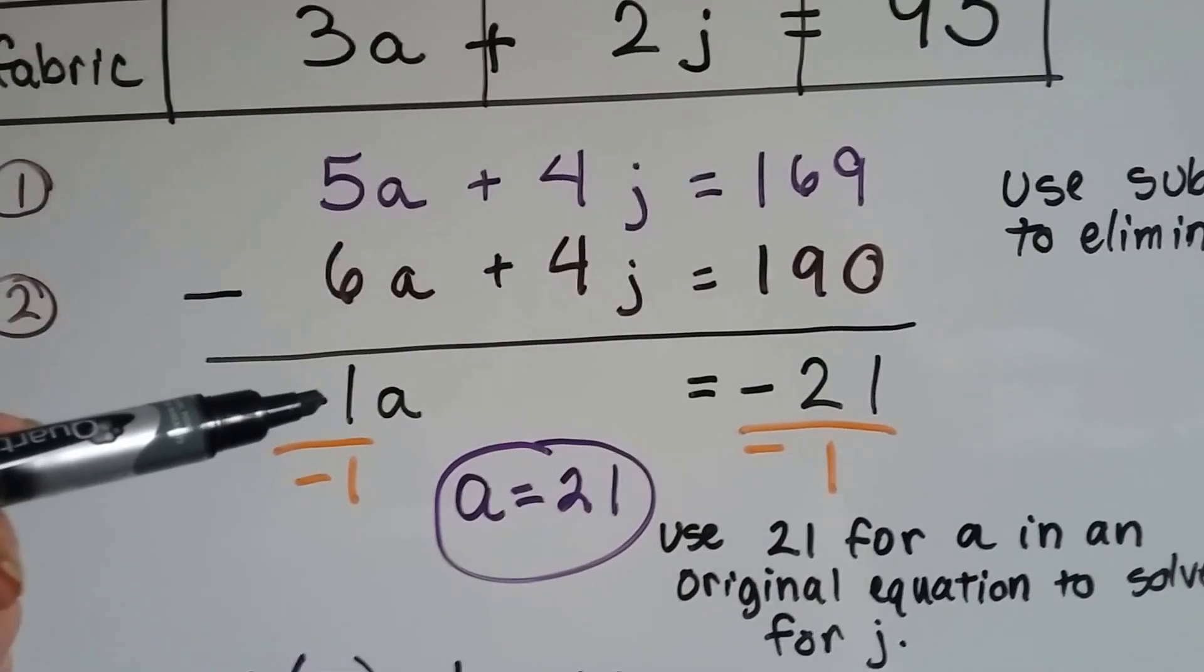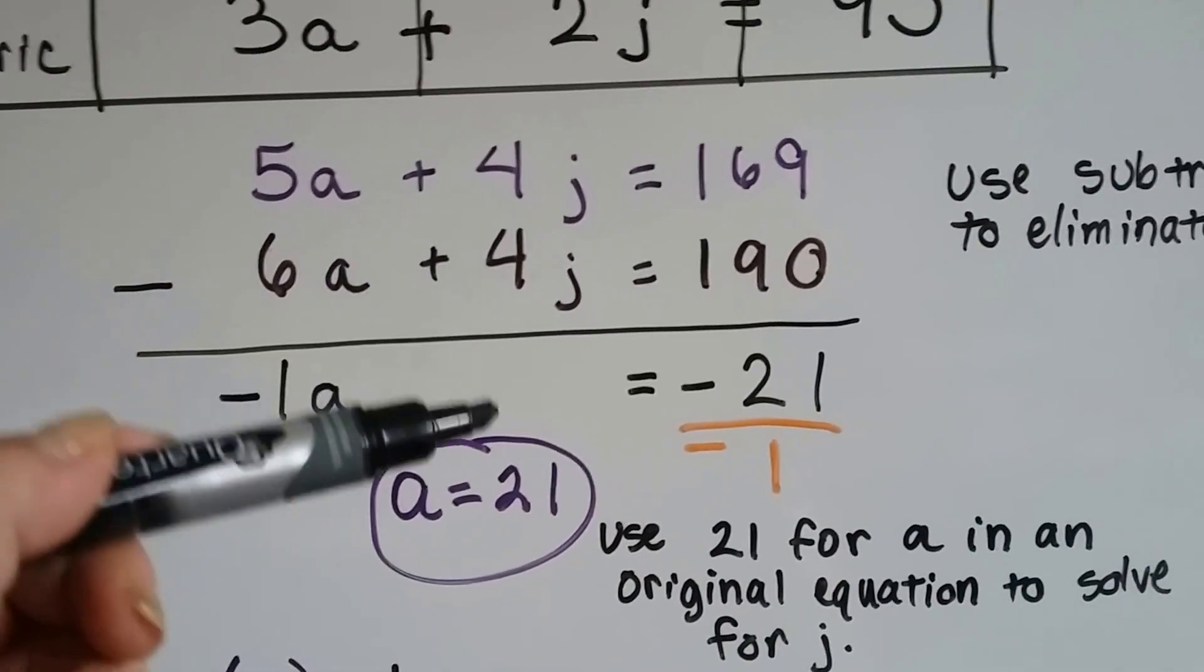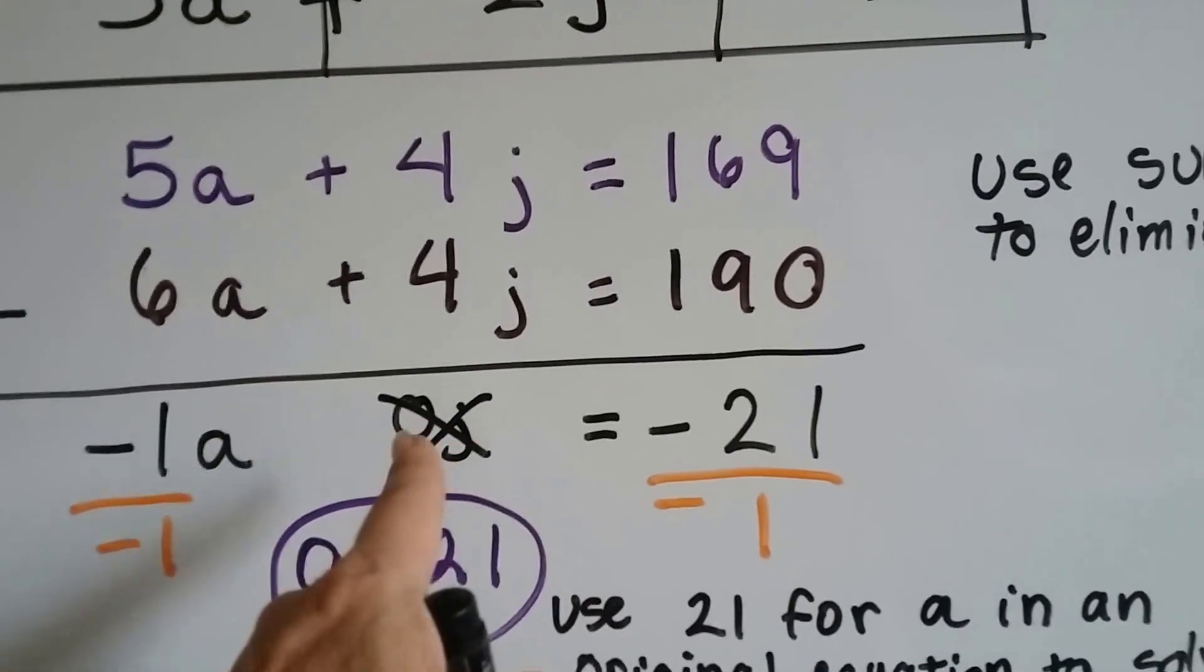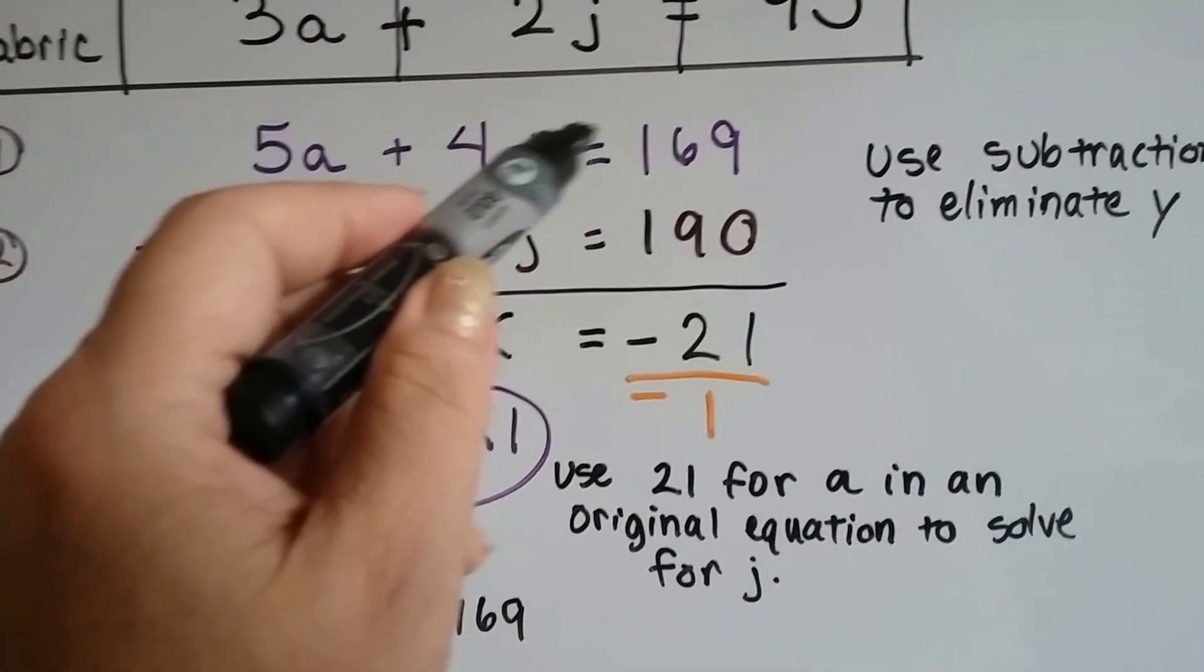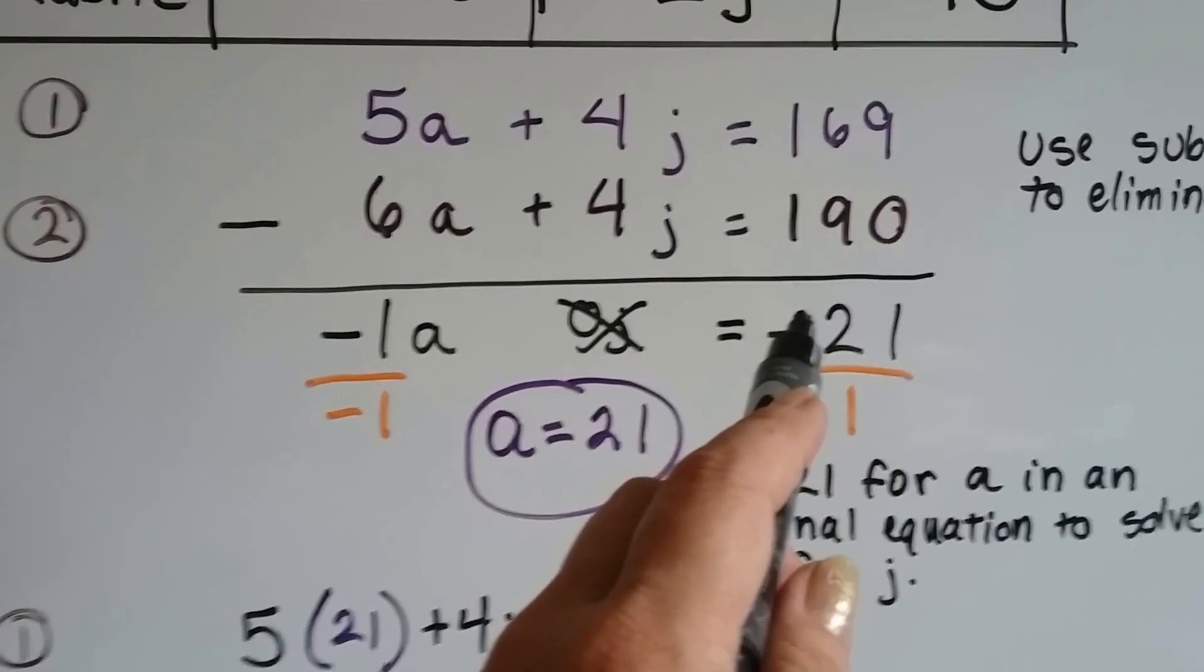5A take away a 6A is a negative 1A. 4J take away 4J is 0J. See? So we really don't need to write it. And 169 take away 190 puts us at negative 21.